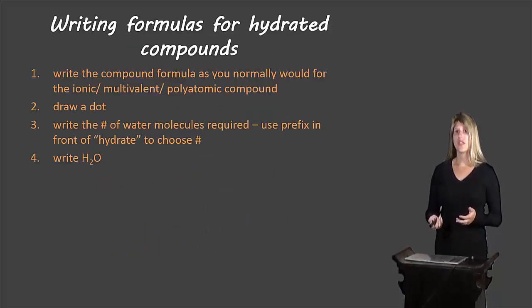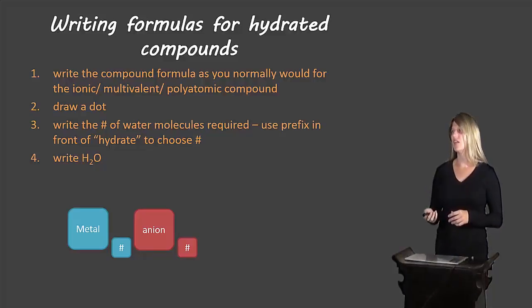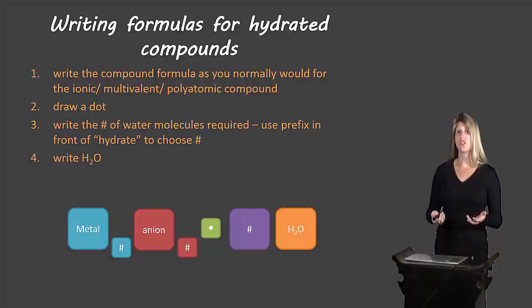Now let's take a look at how you'd write the formulas. Again you can pause the video and write the rules down. You'd start off by writing the compound formula as you normally would. Again I'm not going to go through the rules for how to write compound formulas. Then you'll write how many of each you need, the metal, how many you need, the anion, how many you need. You'll write a dot and then you'll write the number of waters required and then the formula H2O.